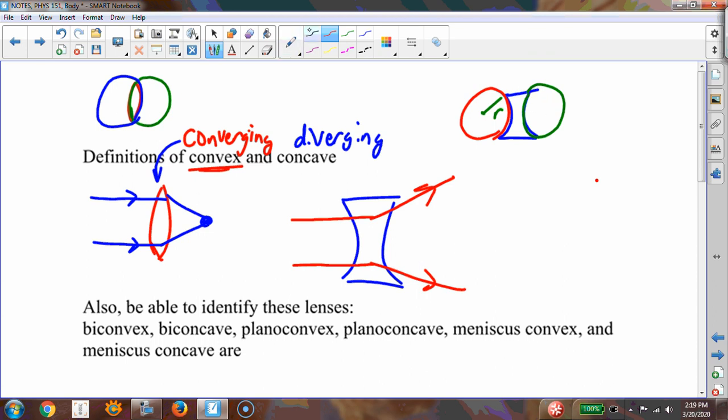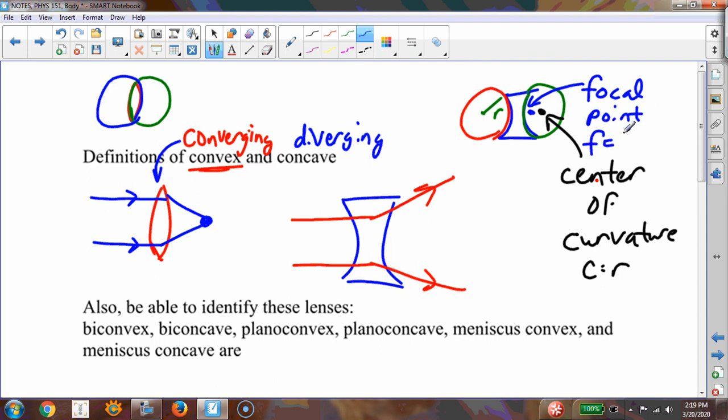I also want to say here that let's define a couple of things. If I think about this right here, there is a point right here in the center of the sphere. This is called our center of curvature. And it is equal to the radius of that sphere. There's another point that's in between the lens and the center of curvature, and that's called the focal point. The focal point, or F, is equal to the center of curvature divided by 2.